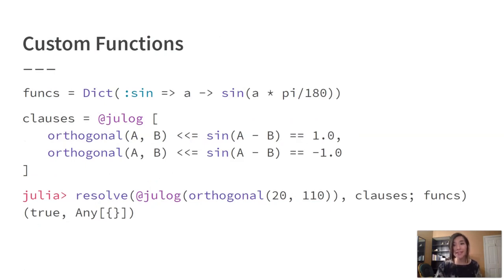Another helpful feature that Julog provides is the ability to evaluate custom Julia functions in place of constants. For example, if we wanted to evaluate trigonometric functions in the course of resolving a Julog query, we could supply them in a dictionary that maps predicate names to the corresponding Julia functions. We could then define a predicate that checks whether two input angles are orthogonal. These two features — interpolation and custom functions — allow for a tight interface between regular Julia code and Julog reasoning, allowing Julog's reasoning engine to exploit fast Julia code for numeric functions when those functions are more efficiently defined in a procedural or imperative style. They also make it easier to use Julog as a subcomponent within other Julia code.